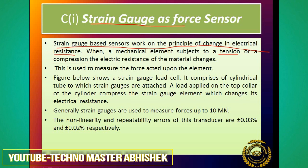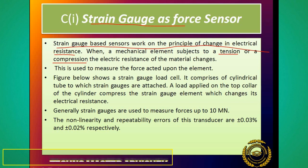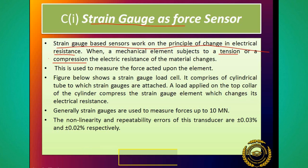जैसे ही उसके आकार में change आएगा, उसी से जुड़ा होगा आपका strain gauge। तो उसमें जो electrical resistance है - उस material में जिसमें change आ रहा है - उसका electrical resistance भी change हो जाएगा। So when we apply tensile or compression force on the mechanical element, the electrical resistance of the strain gauge material will also change, and we will measure the force in comparison to that change.